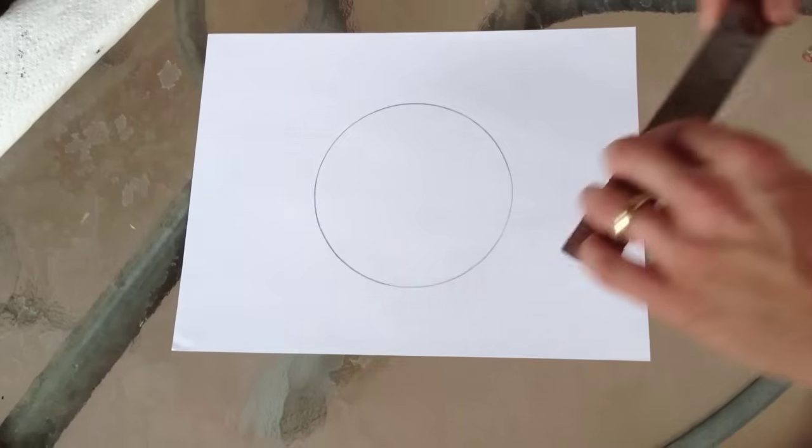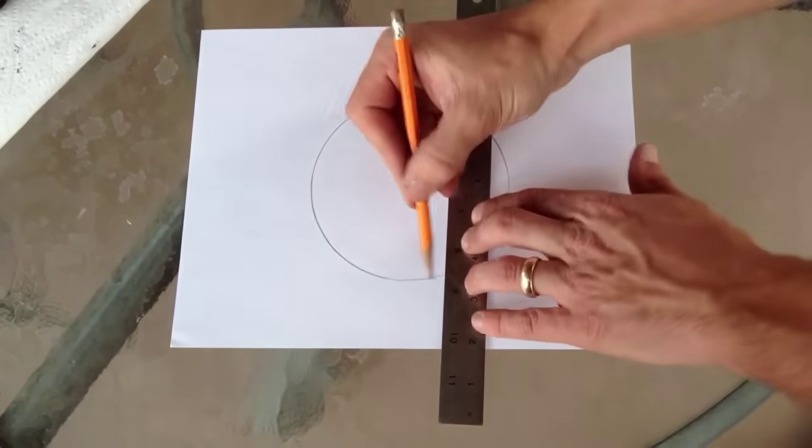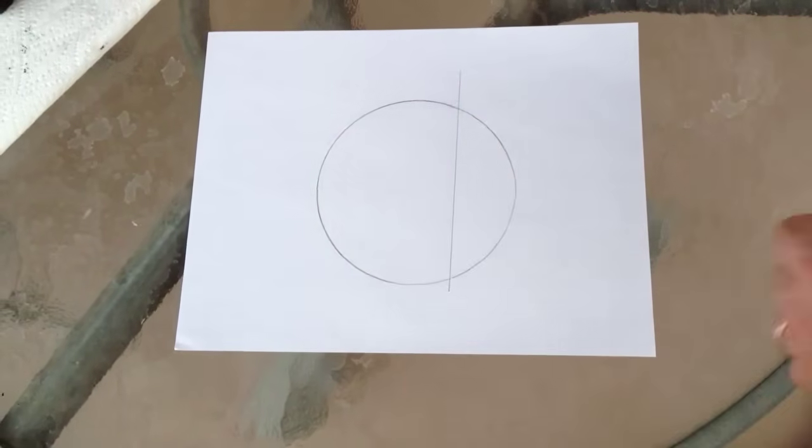Start off by drawing a cord through your circle. This is just a line that goes through without going through the center. It can be anywhere.